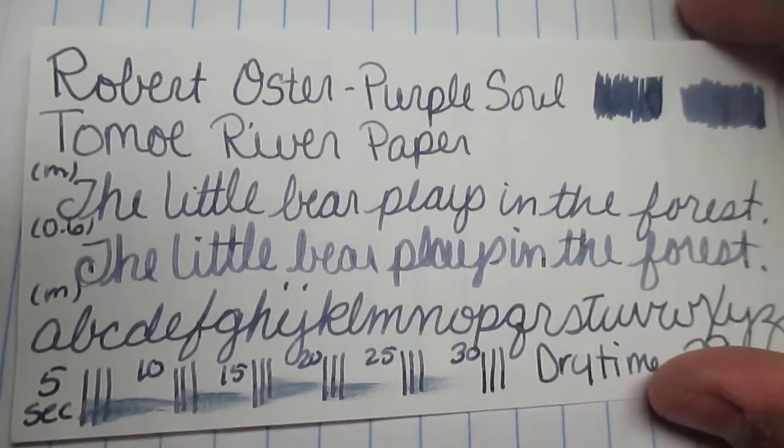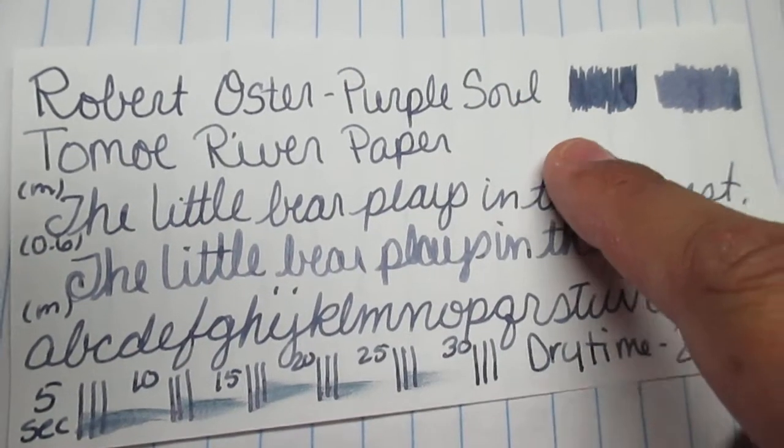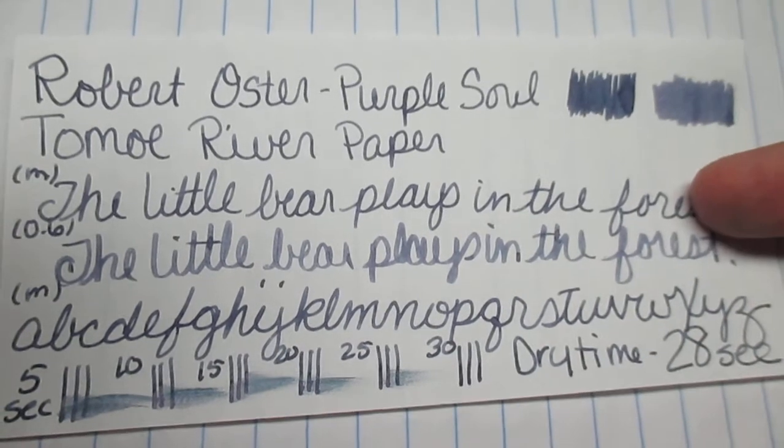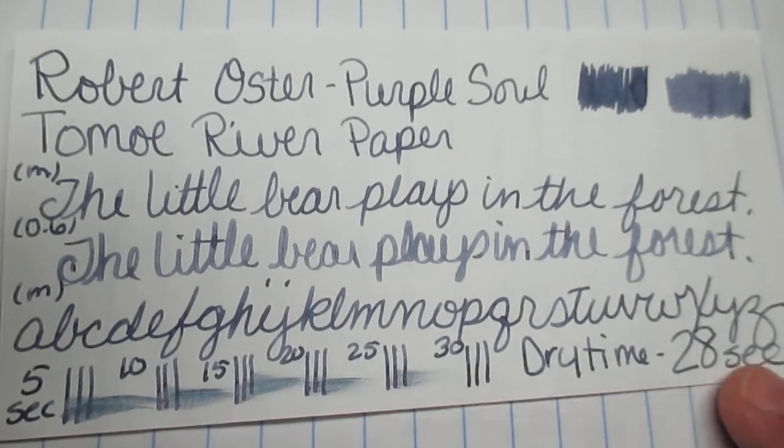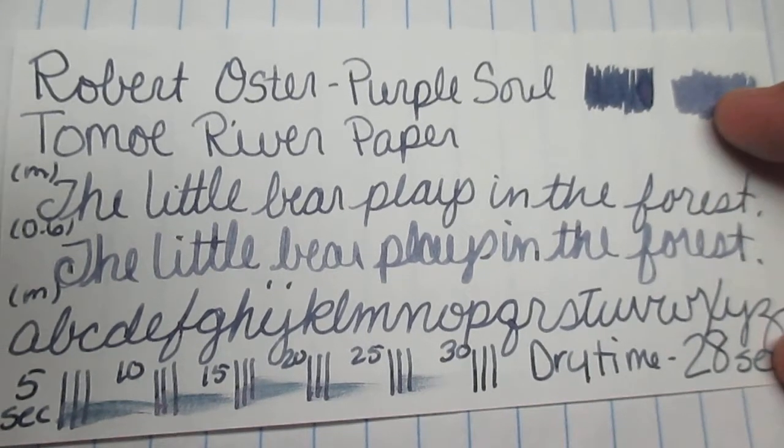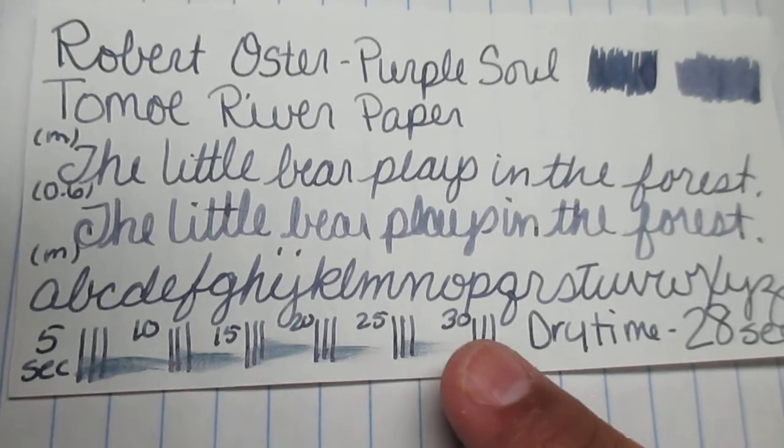We have Tomoe River. With the name on it, I did my medium scrubby, my 0.6 scrubby, my phrase, my alphabet, A through Z. And on this paper, it took 28 seconds to dry, as you can clearly see right here in my little scrubs.